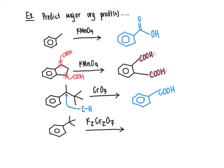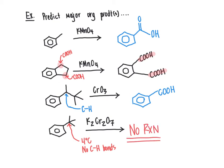Last but not least, we have tert-butylbenzene treated with potassium dichromate, Cr2O7, which we refer to as dichromate. What you have to pay attention to here — and not go on autopilot — is that we have a quaternary carbon at the benzylic position. There are no benzylic C-H bonds, and so there can be no reaction. The oxidation reaction requires a C-H bond to oxidize. Since there are no C-H bonds at that benzylic position, there will be no reaction.